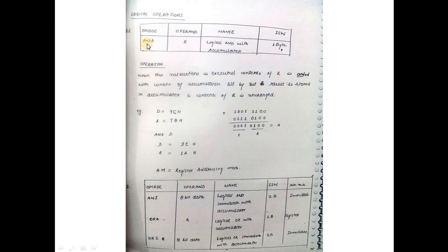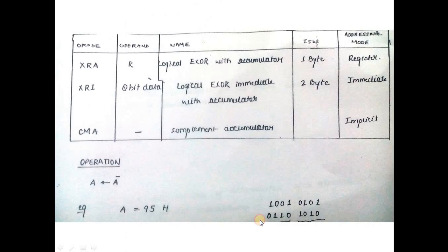Logical operations: ANA is logical AND with accumulator and register (one-byte), ANI is AND with immediate data (two-byte). Similarly, ORA is OR with accumulator (one-byte), ORI is OR with immediate (two-byte). XRA and XRI for exclusive OR. CMA complements the accumulator using implicit addressing mode.